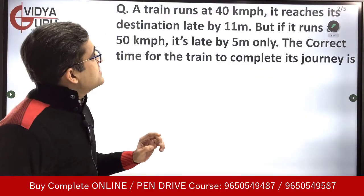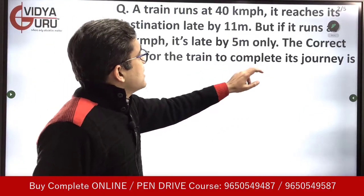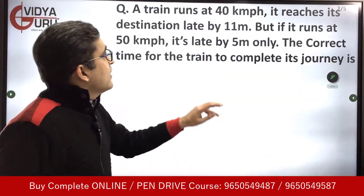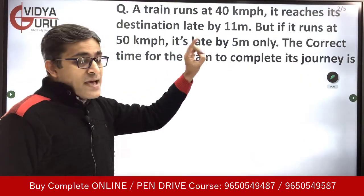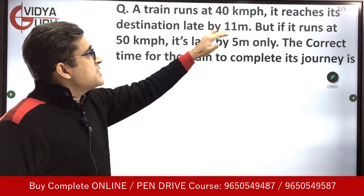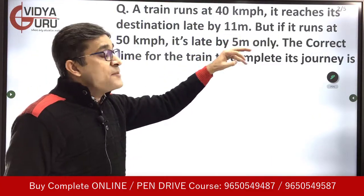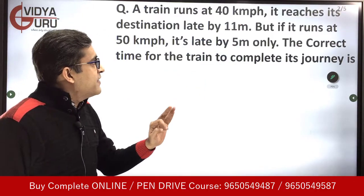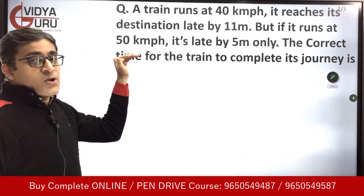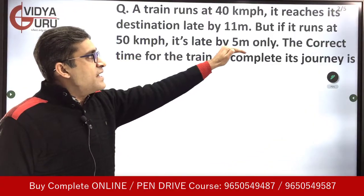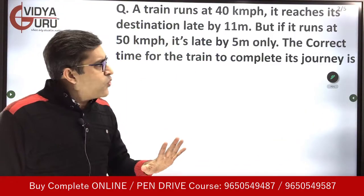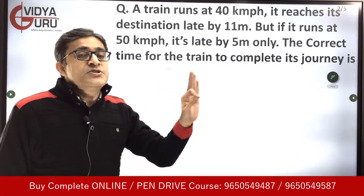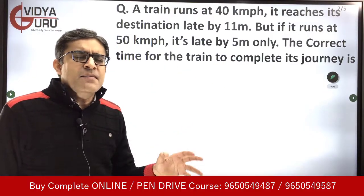The question says: a train runs at a speed of 40 kilometers per hour. What is the speed of the train? 40 kilometers per hour. And when it does so, it reaches its destination late by 11 minutes. It is late by 11 minutes when it runs at 40 kilometers per hour. But when it runs at 50 kilometers per hour, then it is late by 5 minutes only.